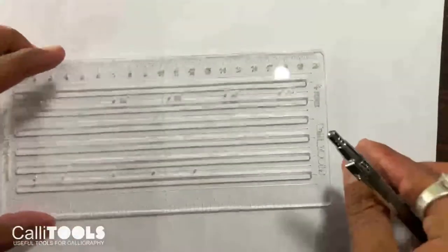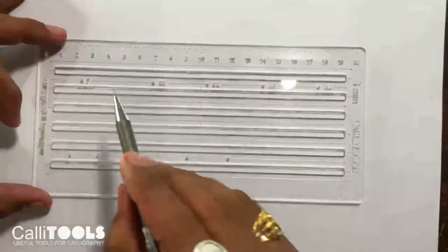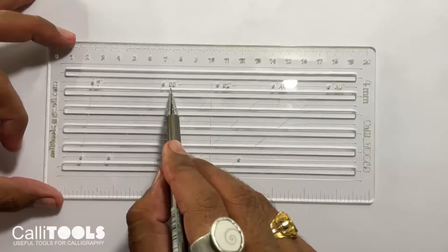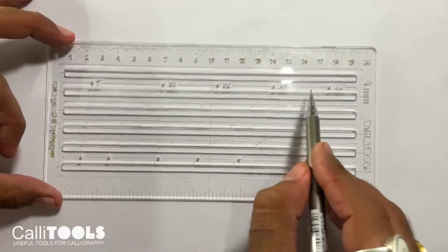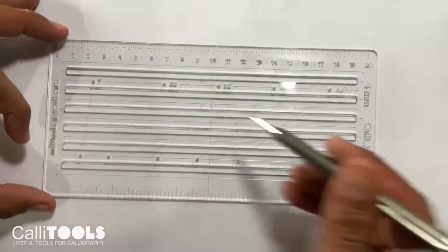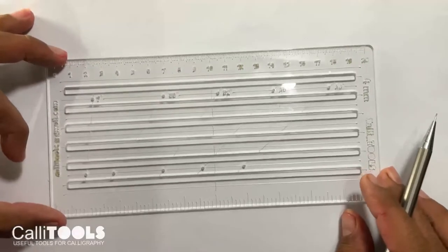So this is 4mm stencil. It has 7 degree slant, 55 degree slant, 52 degree slant, 45 degree slant, and 40 degree slant. And 4mm letter height or line height.